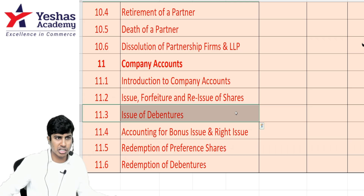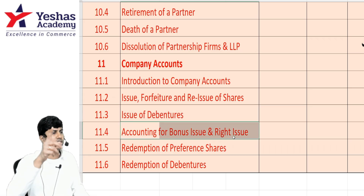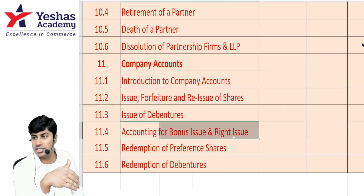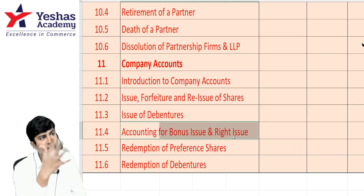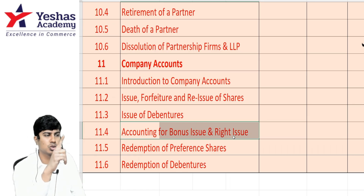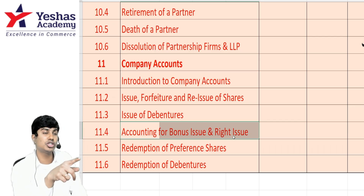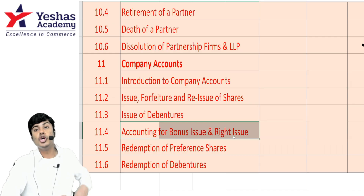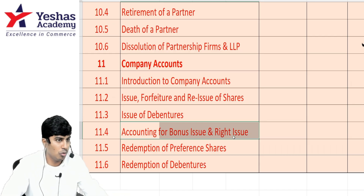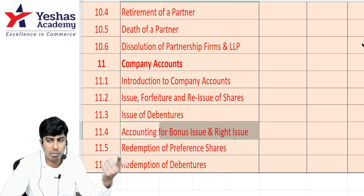For bonus issue, the reserves that can be utilized are CRR, securities premium, capital reserve, general reserve, and P&L. Securities premium and capital reserve can be used only if realized in cash. The journal entry is: reserves to bonus shares, bonus shares to share capital. Bonus issue can be made only on fully paid-up shares. If partly paid-up, you can convert to fully paid-up by bonus, but in that case you cannot use CRR and securities premium.